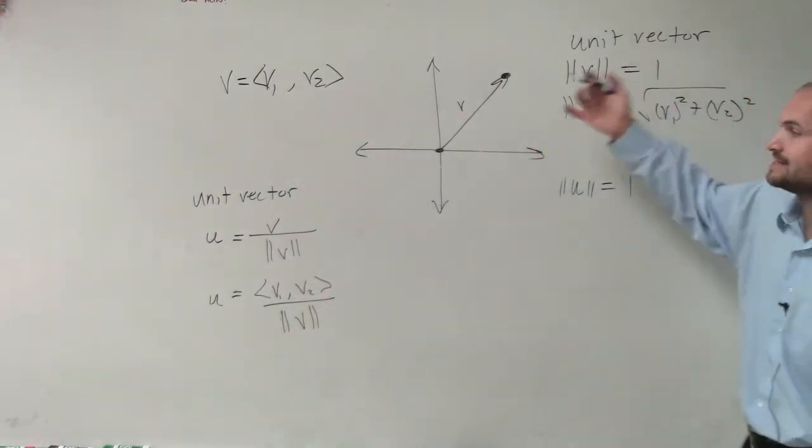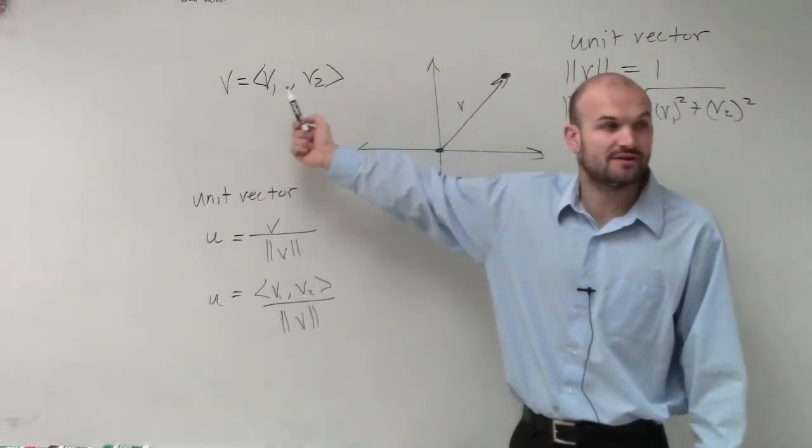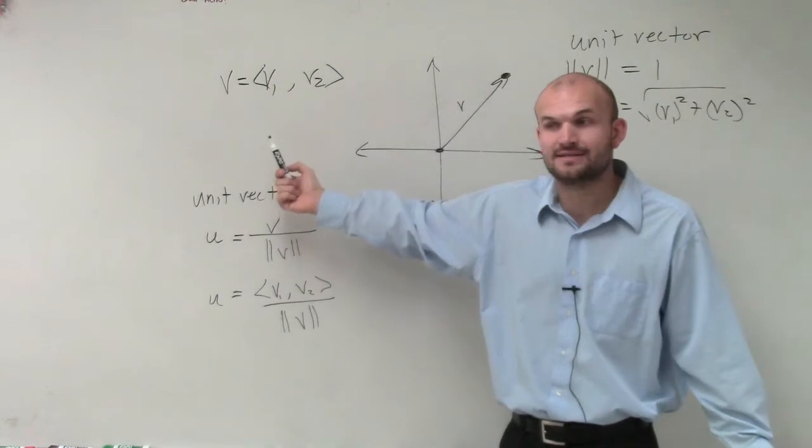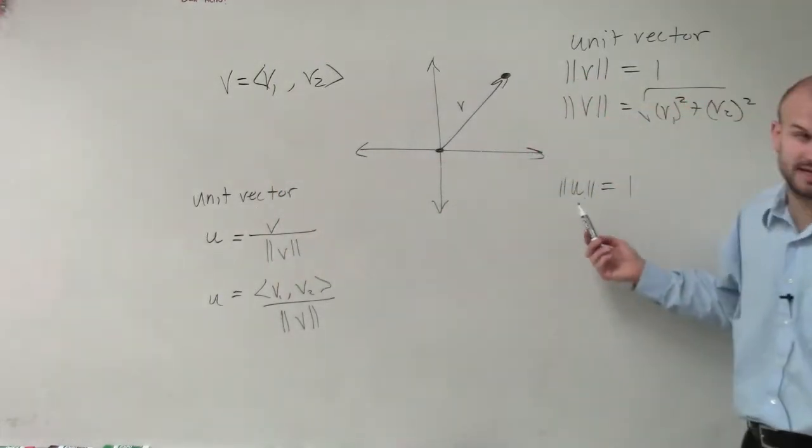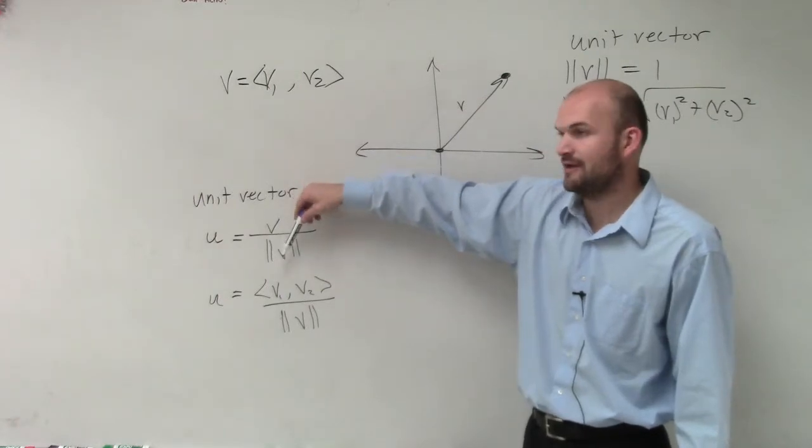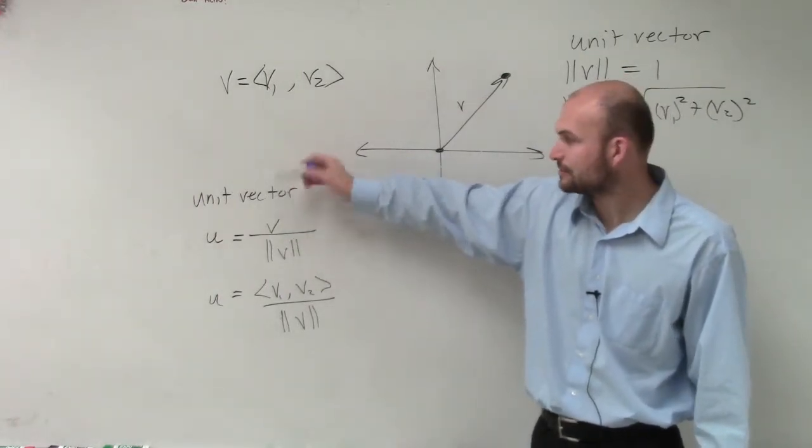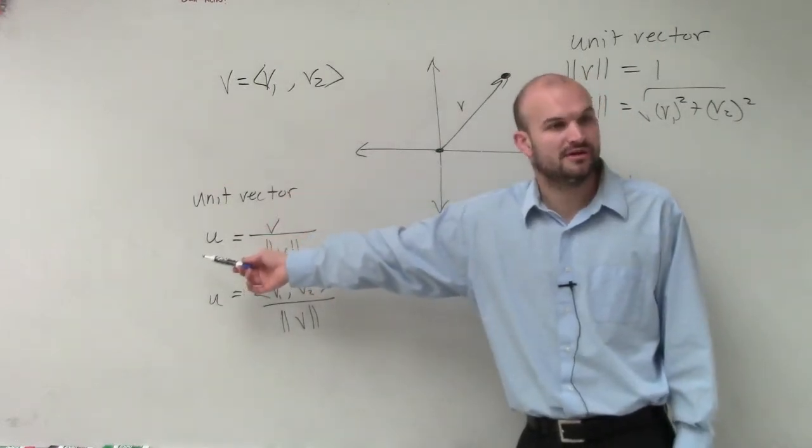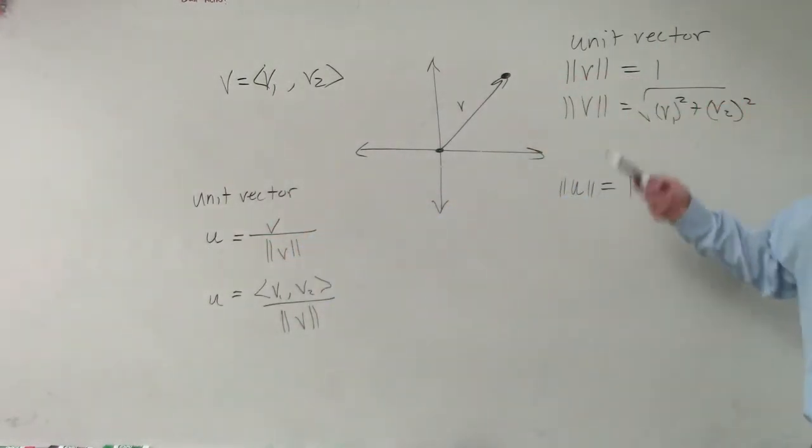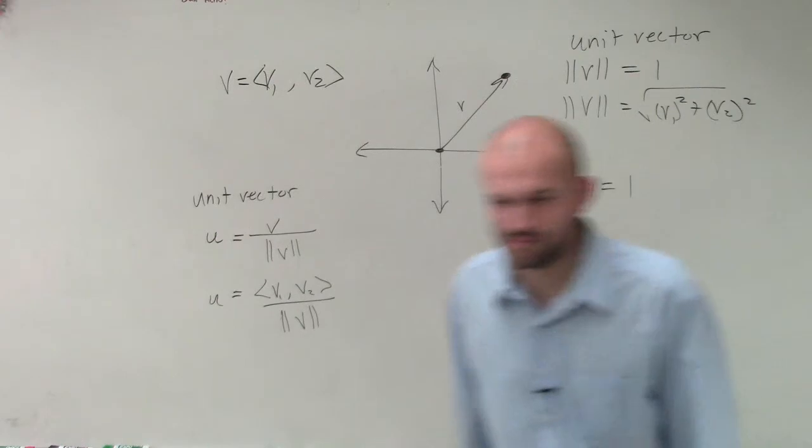So all I want you to do is, if I give you a vector v and I say find the unit vector, that means find when I can take the magnitude of it, it's going to equal 1. All you simply do is take the vector and divide it by its magnitude. When you take the vector and divide it by its magnitude, you now have created a unit vector. What is a unit vector? A unit vector is when you take the magnitude of it, it equals 1. Let's go through an example with real numbers. How does that sound? I think it'll make a little bit more sense.